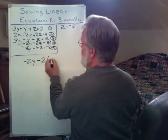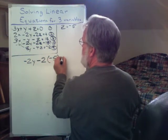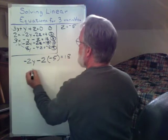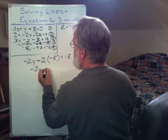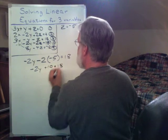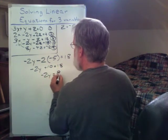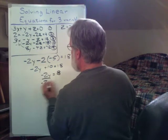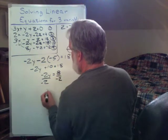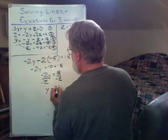That's minus 2y plus 10 equals 18. Minus 2y equals 8. Divide both sides by minus 2. I have y equals minus 4.